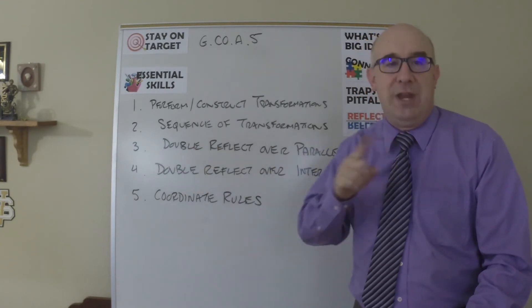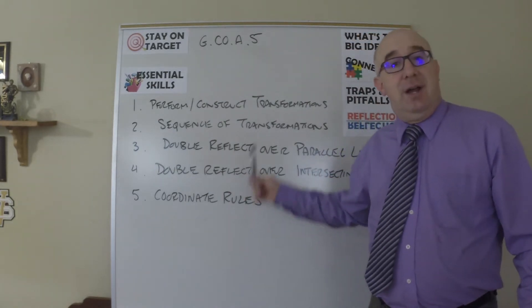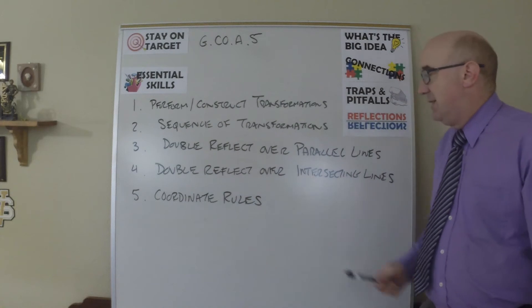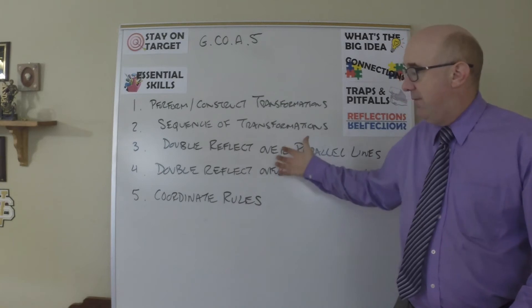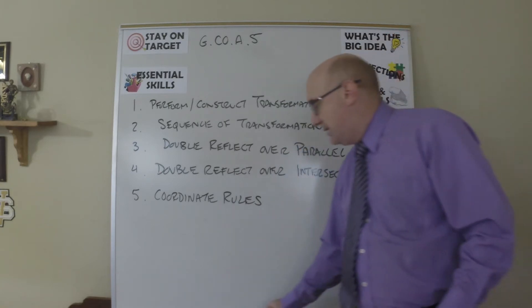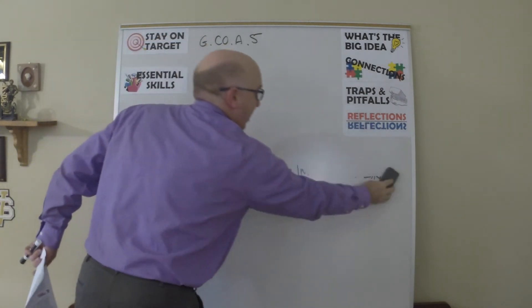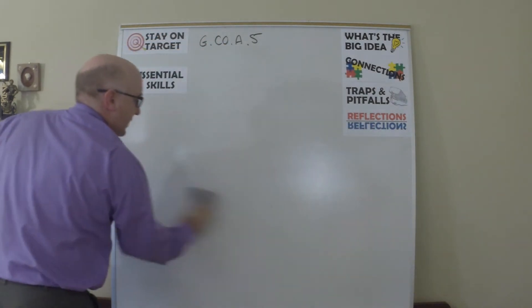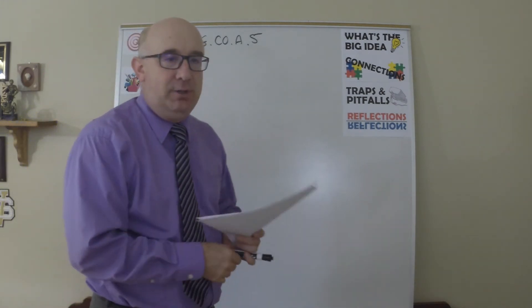Double reflection over parallel lines, double reflection over intersecting lines, and then coordinate rules. Huge things in here, not very easy either. Things that take some time. So the connections, of course, are to congruence. That's really what it comes down to. That we're setting the basis of congruence right here.